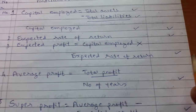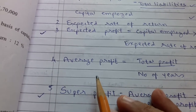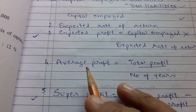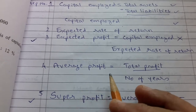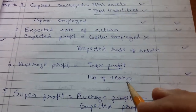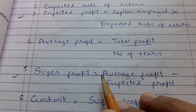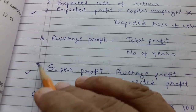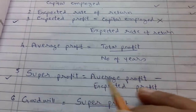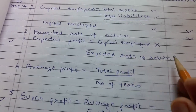Step 3 gives you the expected profit. Step number 4 is average profit. If the figures suggest the average profit method, use that; if it is a rising profit trend, you can use the weighted average method. Average profit equals total profit divided by number of years. Step number 5 is super profit, which is average profit (step 4) minus expected profit (step 3).